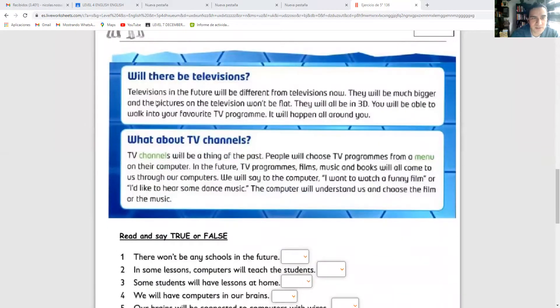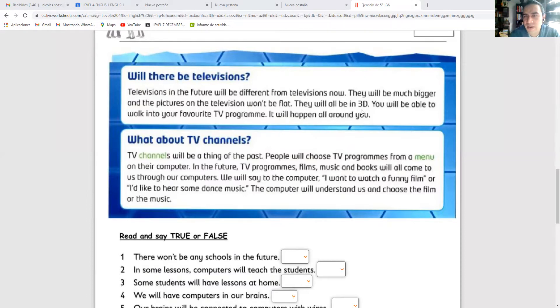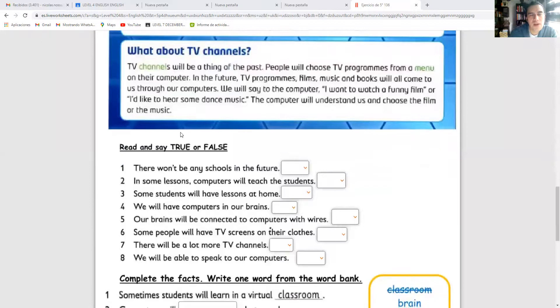Will there be televisions? Televisions in the future will be different from televisions now. They will be much bigger and the pictures on the television won't be flat. They will all be in 3D. You will be able to walk into your favorite TV program. It will happen all around you. What about TV channels? TV channels will be a thing of the past. People will choose TV programs from a menu on their computer. In the future, TV programs, films, music, and books will all come to us through our computers. We will say to the computer, I want to watch a funny film or I'd like to hear some dance music. The computer will understand us and choose the film or the music.